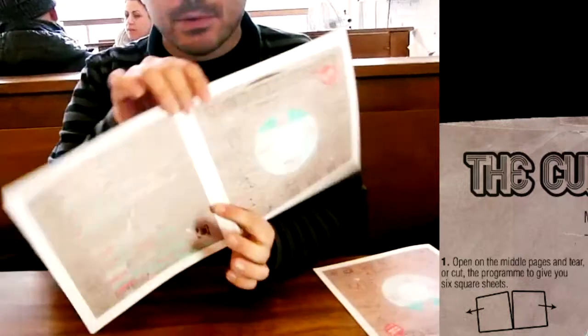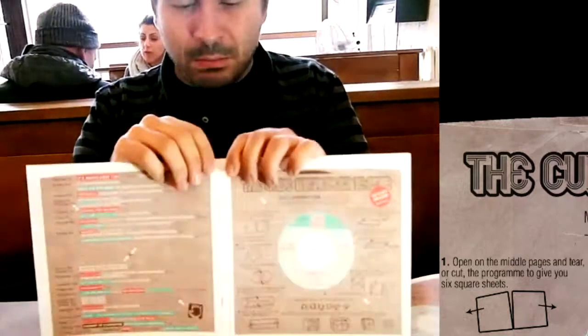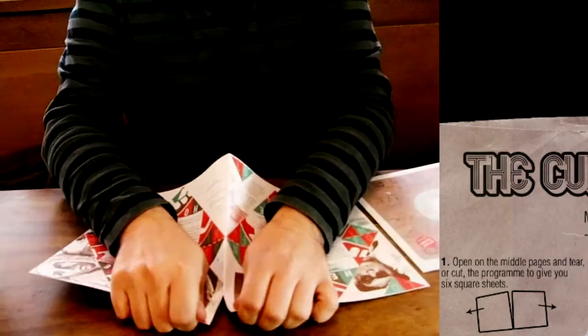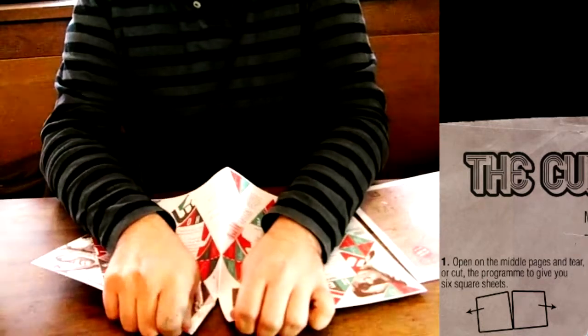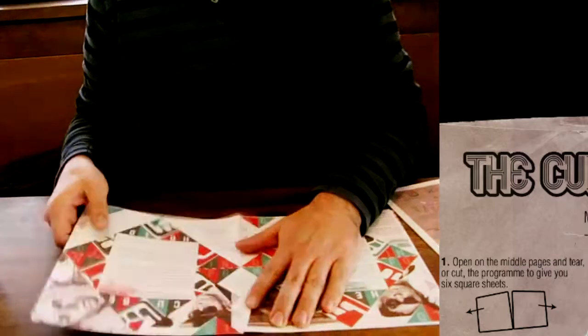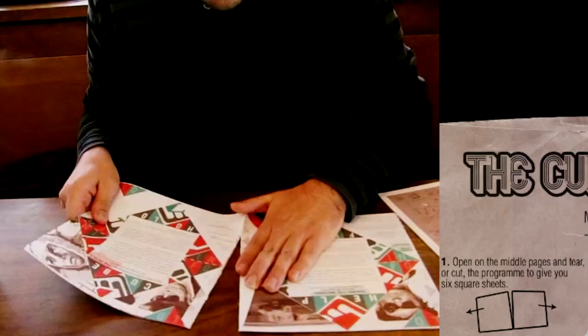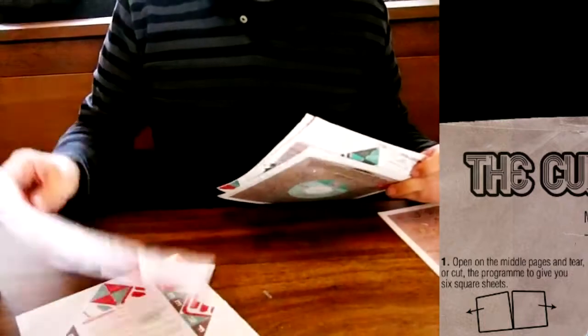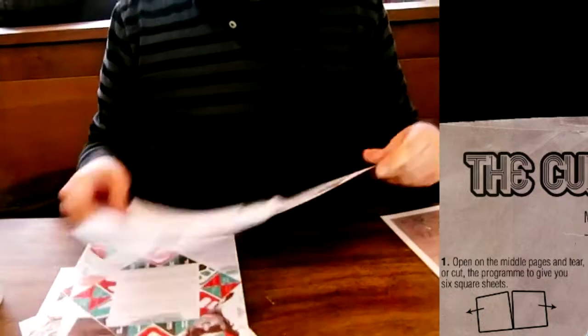Number one, open the middle pages and tear or cut the program to give you six square sheets. Open and then I'll do it like this. So, of course, one, two, three, four, five, six.